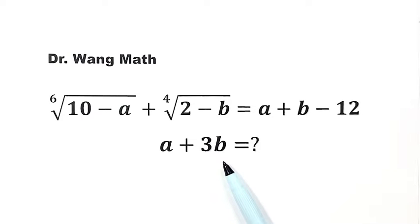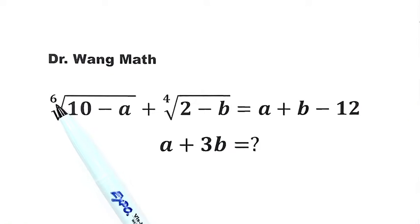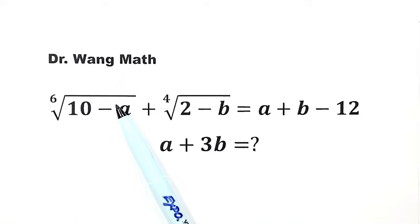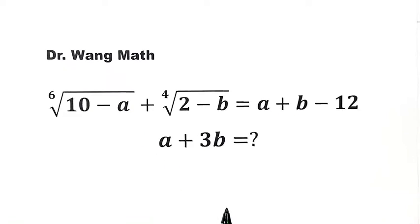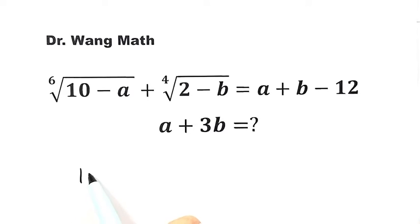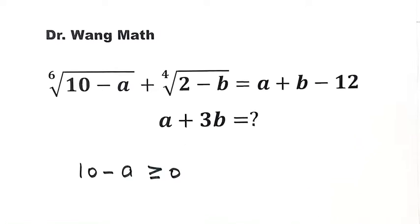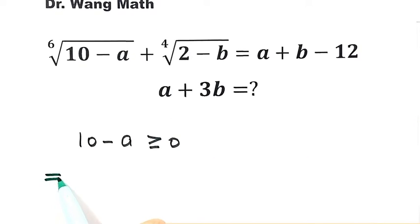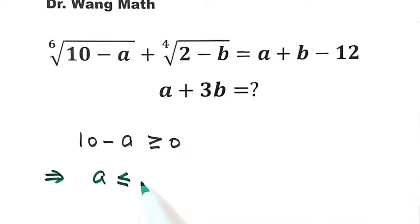How do we solve this question? We start from the left-hand side first. Because the 6th root is an even number, the part under the root must be bigger than or equal to zero. So that means 10 minus a is bigger than or equal to zero, which means a is less than or equal to 10. We label this as result 1.